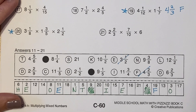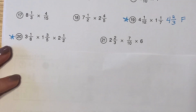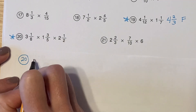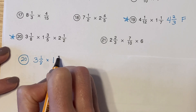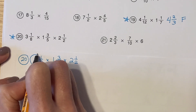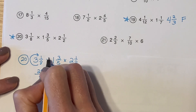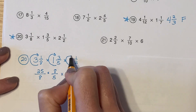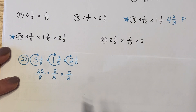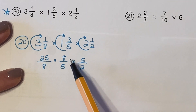Let's go ahead and do one last problem together — number twenty. That's a little bit longer since I have three numbers, but I'm still going to do the exact same thing and just be nice and neat. I'm going to rewrite it on a separate piece of paper: three and one-eighth times one and three-fifths times two and one-half. Let's change them into improper fractions. Eight times three is twenty-four plus one is twenty-five. I changed each of my mixed numbers into improper fractions. I could multiply straight across, but I'm going to see if I can simplify first to make my life easier.